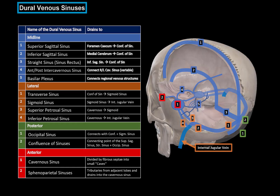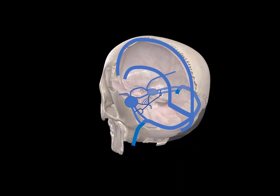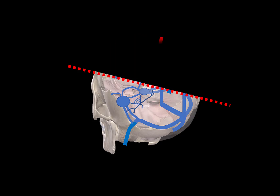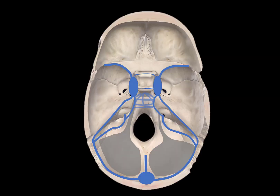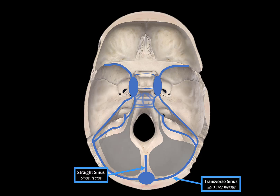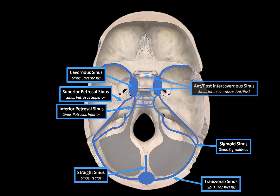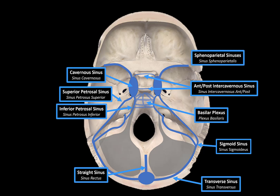Here are the dural sinuses we went through last time. Let's expand on that and make a cross section right across the cranium. From this perspective, we can see the straight sinus, the transverse sinus, the sigmoid sinus, the inferior petrosal sinus and the superior petrosal sinus, the cavernous sinus, and between them the anterior and posterior intercavernous sinus, the basilar plexus, and the sphenoparietal sinus.